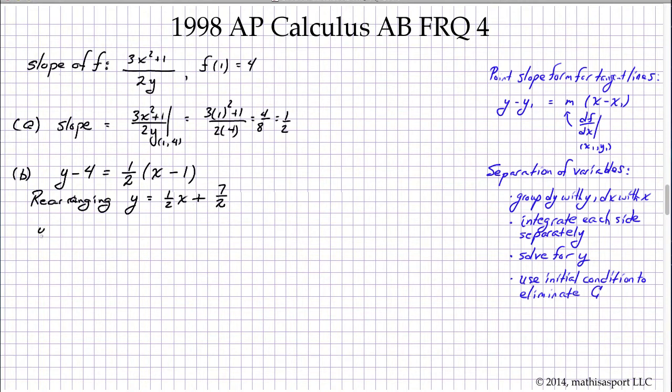And so y of 1.2 equals 1 half of 1.2 plus 7 halves. That's going to be 1 half of 1.2 is 0.6, 7 halves can also be written as 3.5, and so we get 4.1.